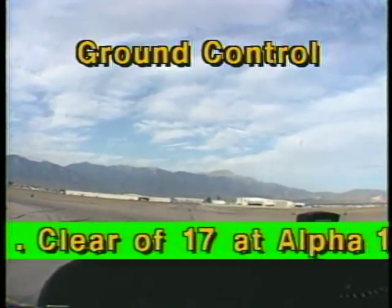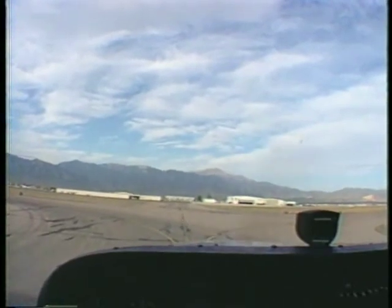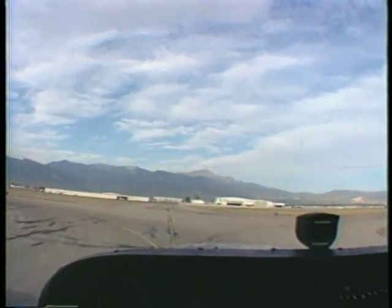You may also receive additional instructions after landing. Cessna 740, next available taxiway, contact ground point 7. Cessna 740, roger. Jensen Ground, Cessna 62740, clear of 17 at Alpha 1, request clearance to General Aviation Ramp. Cessna 740, taxi to General Aviation Ramp via Alpha.